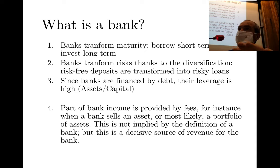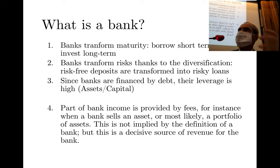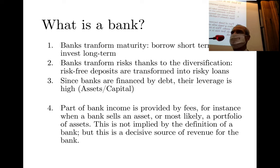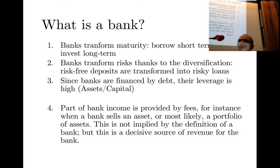This originate-and-distribute model came to the European market more recently but is the trend there too. The balance sheet is not static — it can be very dynamic. Banks can sell assets, even usually non-marketable ones such as loans. The subprime crisis was caused by banks selling loans provided to 'ninja' borrowers — no income, no job, no assets.